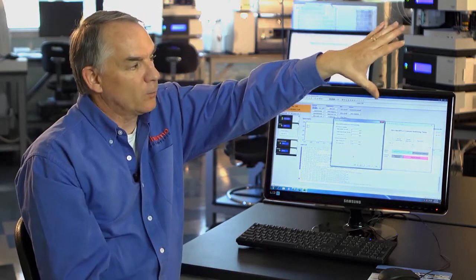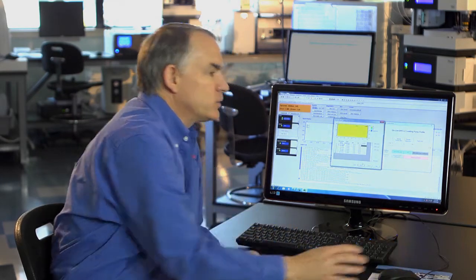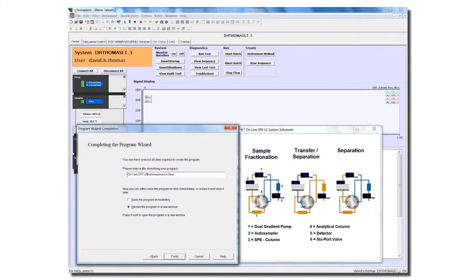So once we've entered those three parameters we really don't have to do anything else. It knows when to switch the valve. It's going to know when to run the gradient programs for each pump. We're really all finished at this point and the rest of the program really is just the basic things that you would enter in for detection and the final method.